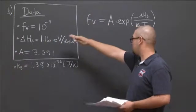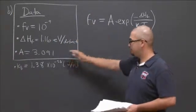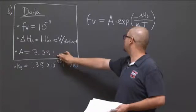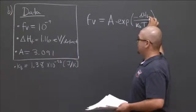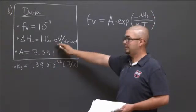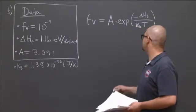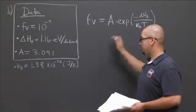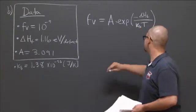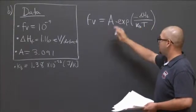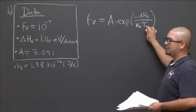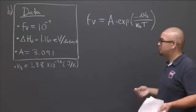You can't solve an equation that has two unknowns and just one equation. So F_V is given, A is given, delta H_f is given, K_B is from our table of constants, and T. So this concludes that the only thing we're not given is temperature, because that's what we're asked to solve.